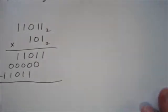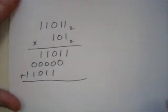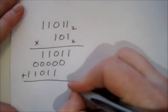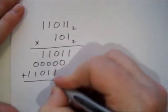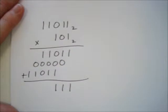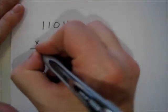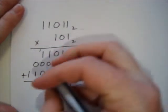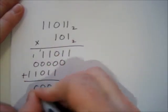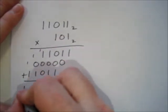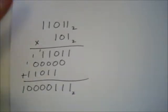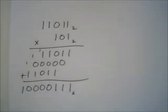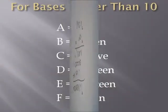It comes down to addition, making sure we add properly in base two. One plus one is two — the way you represent two in base two is zero, carry the one, because it's one two with none left over. Working through the columns, we end up with one-zero-zero-zero-zero-zero-one-one-one base two as the answer.